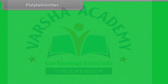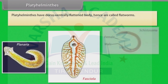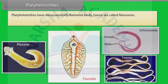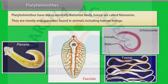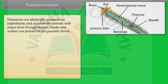Platyhelminthes have a dorso-ventrally flattened body, hence are called flatworms. Platyhelminthes are mostly endoparasites found in animals including human beings. Flatworms are bilaterally symmetrical, triploblastic and acoelomate animals with organ level of organization.